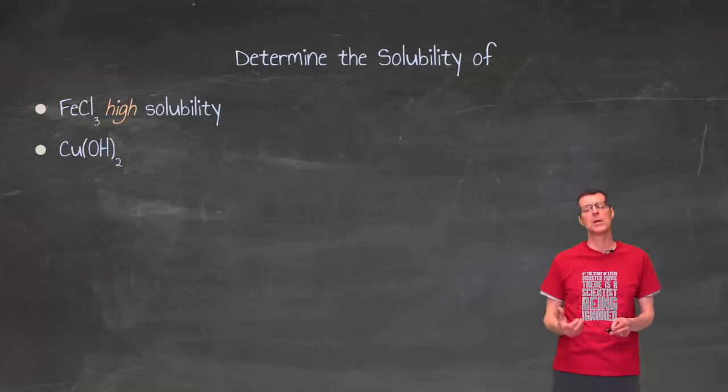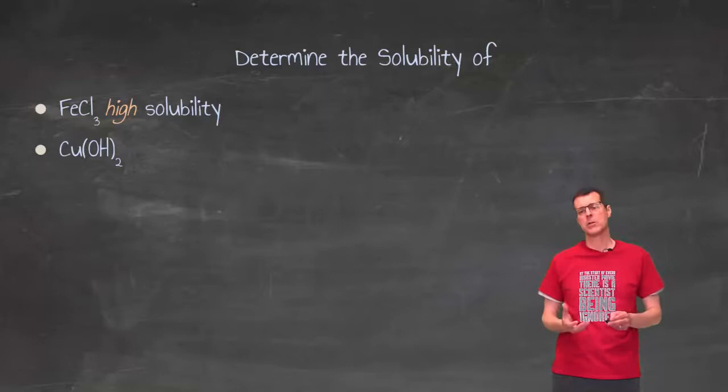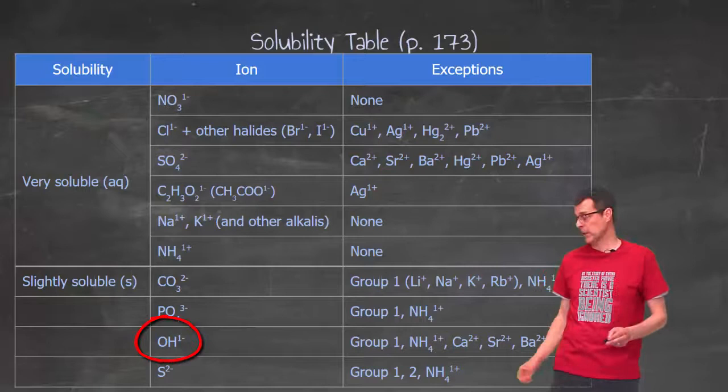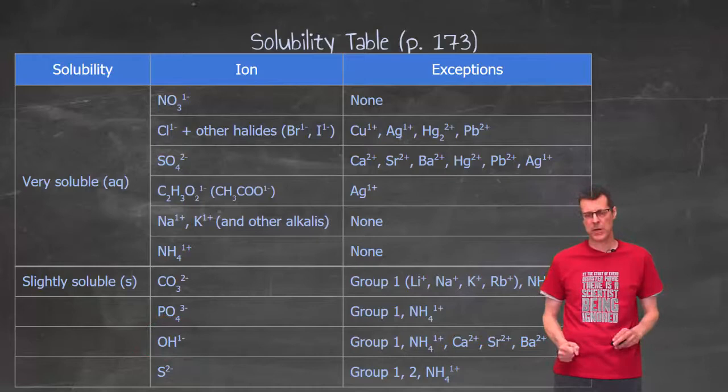If I try a similar thing with Cu(OH)2, we may not have done nomenclature of that yet. It doesn't really matter. I'm going to go to the table again. I'm going to find the OH ion. It's down near the bottom. So it's in the slightly soluble, which means I don't expect it to have very high solubility. I know there's exceptions to the pattern. So I'm looking for copper, Cu,